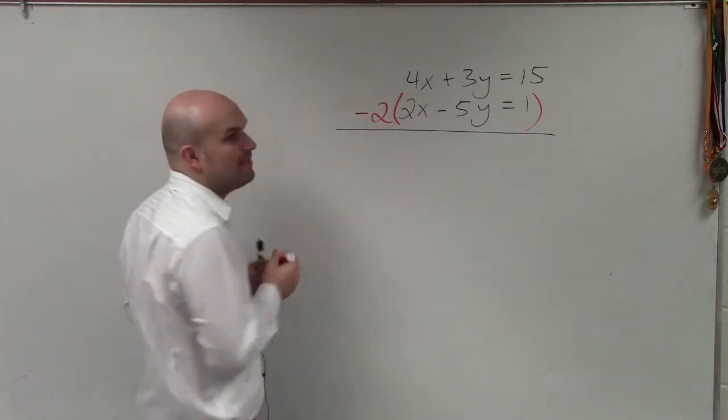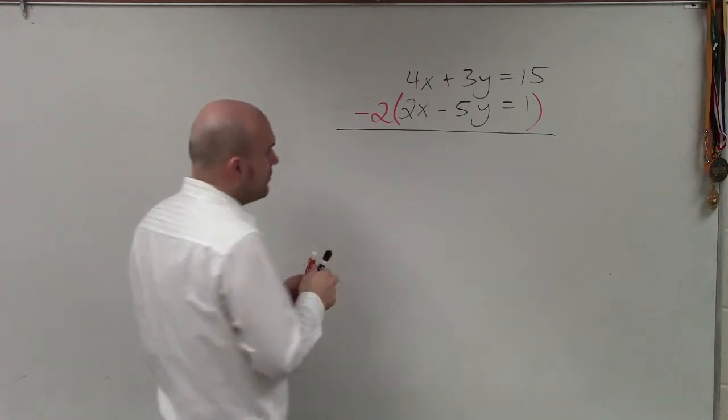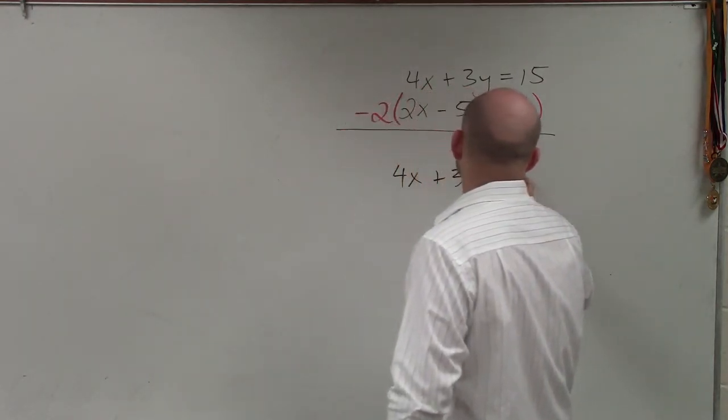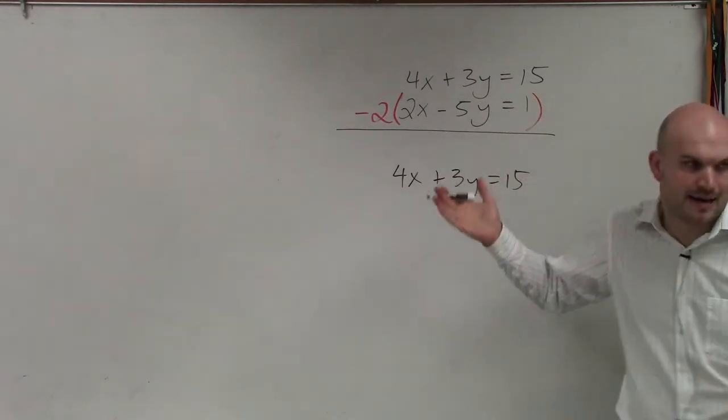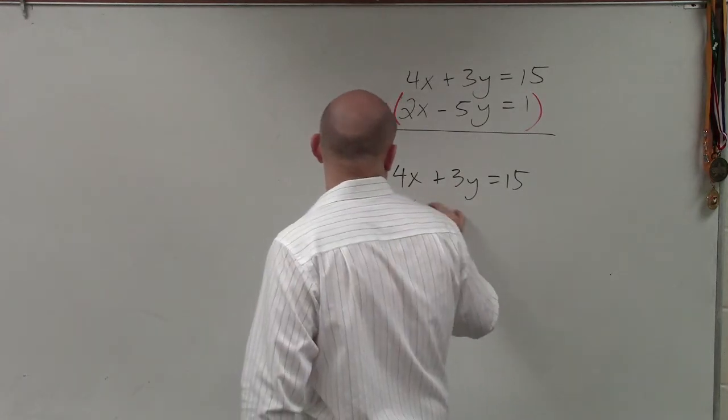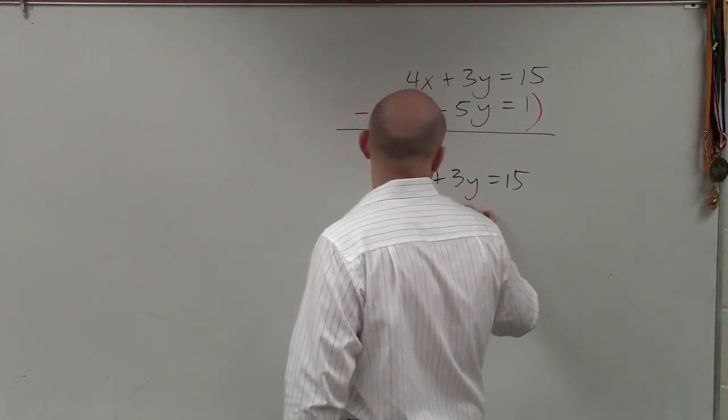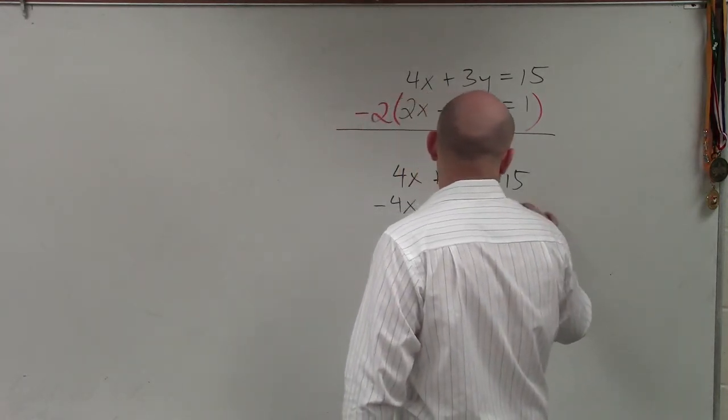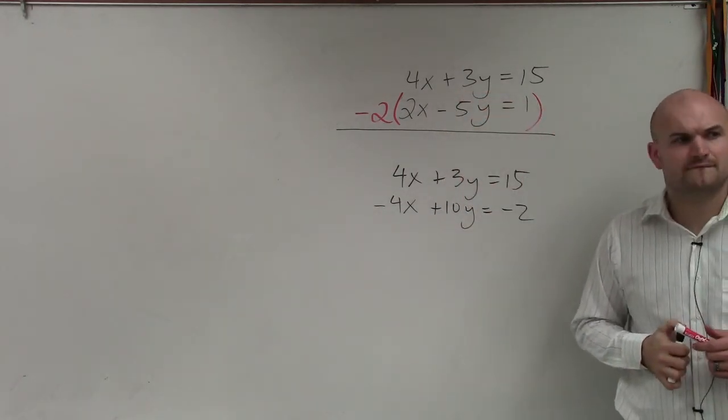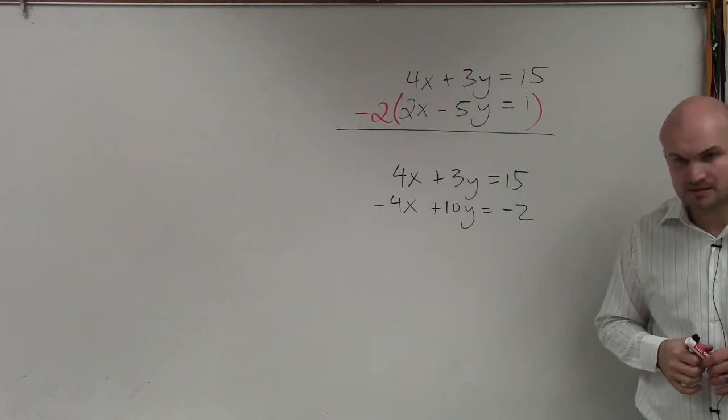Subtracting. So just multiply by a negative number, because now what we obtain is 4x plus 3y equals 15, which is the top equation unchanged. And now my bottom equation is negative 4x positive 10y equals negative 2. Does everybody see that? See what I did?